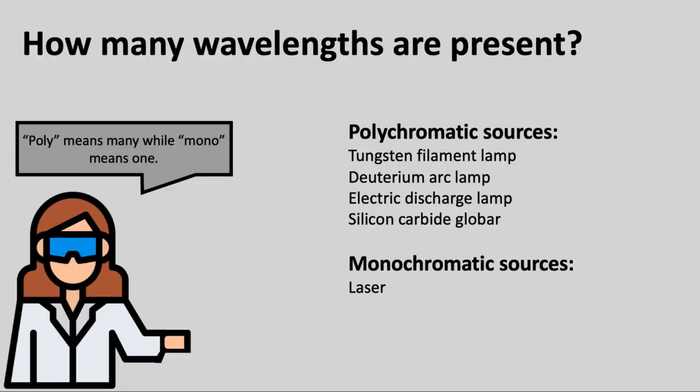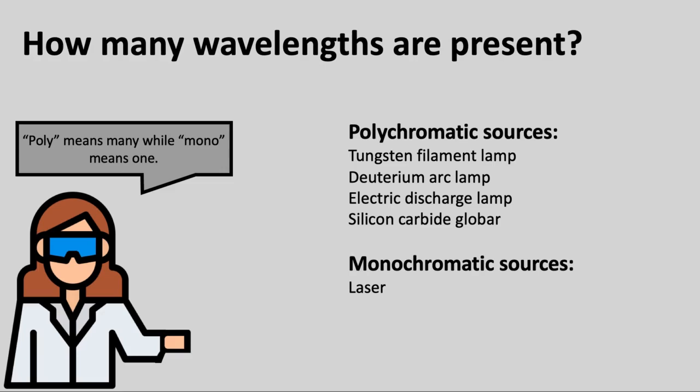Light sources fall broadly into two categories based on how many wavelengths are generated by the light source. Polychromatic light sources generate a range of wavelengths, while monochromatic light sources produce only one.